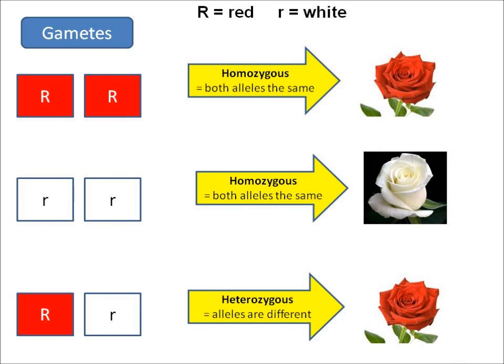To understand the laws of genetic inheritance, let's look at this made-up example to do with the color of roses. A rose can either be red or white, determined by the genes it inherits from its two parents. If both copies of the gene are big R, the rose will be red. If both copies are little r, the rose will be white. But if one allele is red and the other is white, the rose is still red — so red is dominant and white is recessive.